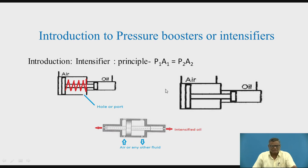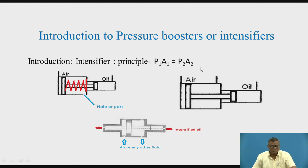In every case, this principle is used. The pressure P2 that is developed can, if needed, be converted into force by supplying this pressurized oil to a cylinder. In some cases you can directly make use of that pressure, such as in pressure-busting machines where testing is done — pressure testing with reference to the bursting operation. This is how intensifiers or pressure boosters are used in circuits.